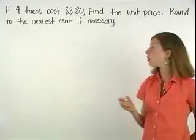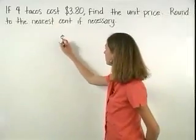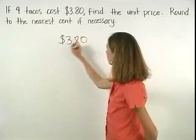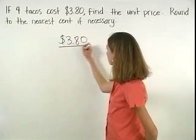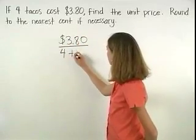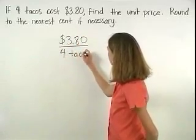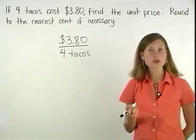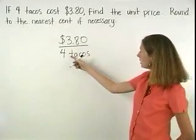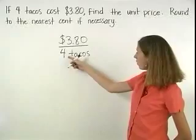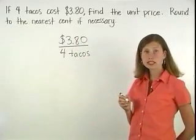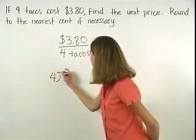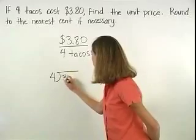Since we know that it costs $3.80 for four tacos, to find the cost for one taco, we need to divide 4 into $3.80, or 4 into 3.80.